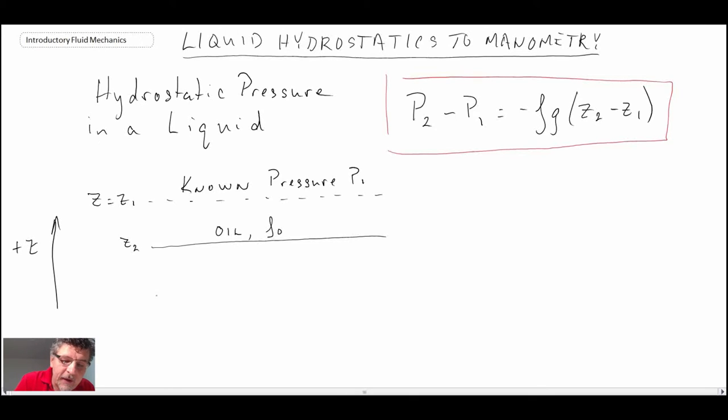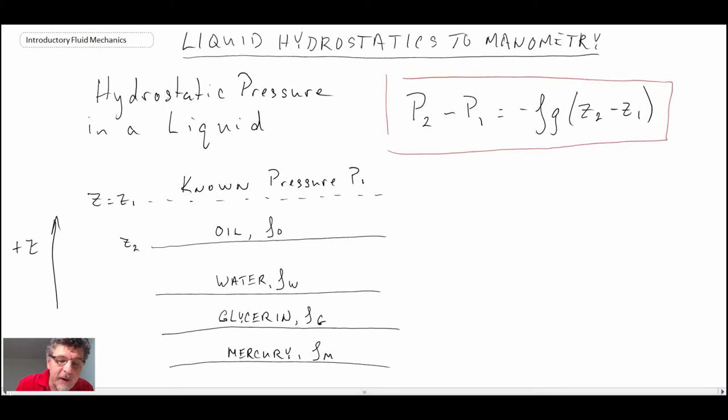Underneath, let's say we have a layer of water, ρW for the water. Then underneath that we have glycerin, ρG for the glycerin. And then finally, let's say way down on the bottom we have mercury. Z3 for the water interface, the glycerin we'll say at Z4, and then finally Z5 for the mercury at the bottom.